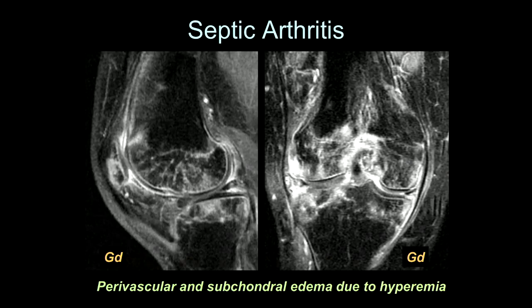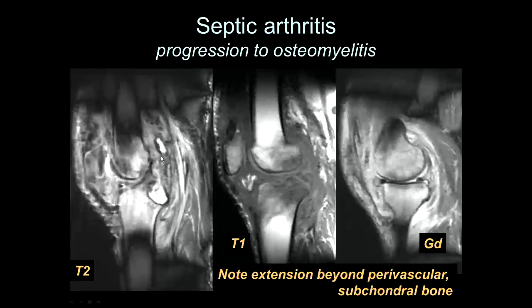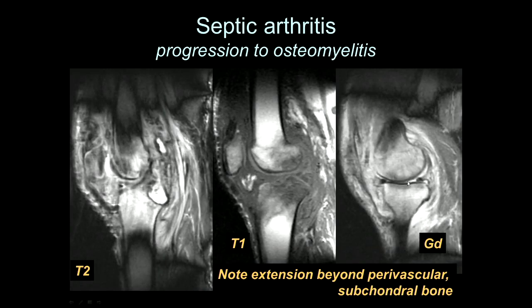As the septic arthritis becomes more established, you develop massive hyperemia. This is shown in this image of the knee with overflow of the blood vessels, leading to this perivascular edema pattern in the bone marrow — analogous to a heavy rainstorm with overflowing of a river. If the infection is allowed to progress, it eventually extends into the subchondral bone and the medullary space. You'll see replacement of T1 signal, bone marrow edema on fluid sequences, and contrast enhancement. At this stage, it's progressed to osteomyelitis.